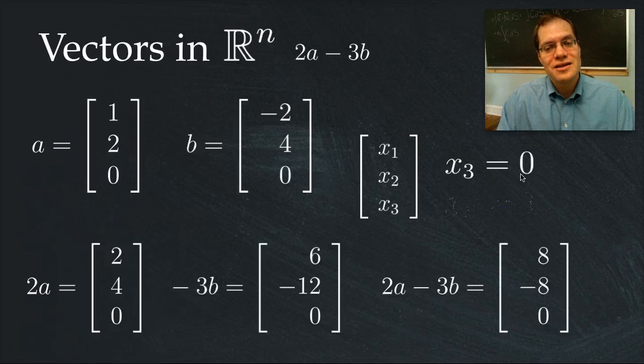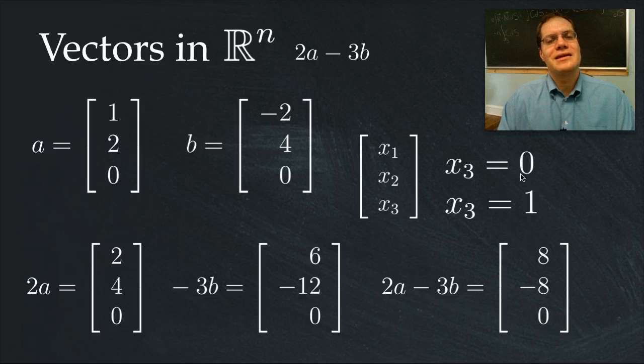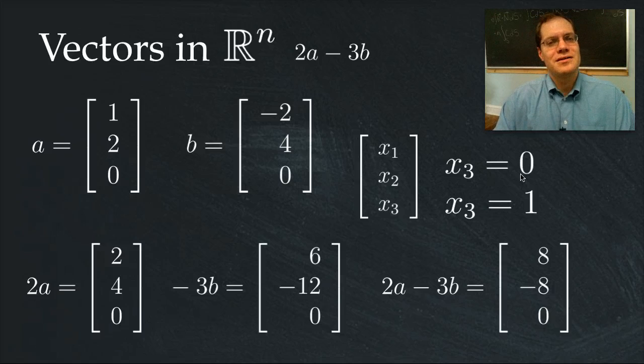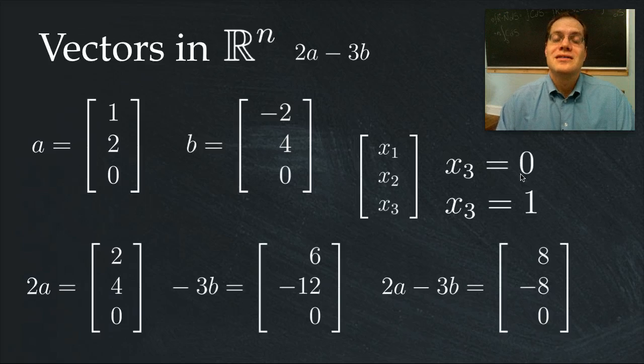And then the follow-up question is this. Consider the property that the third entry equals 1. Is that property preserved by linear combinations? Very important type of question to learn to answer. And just to belabor this point a little bit more, let's consider one final example. We'll go through it relatively quickly.